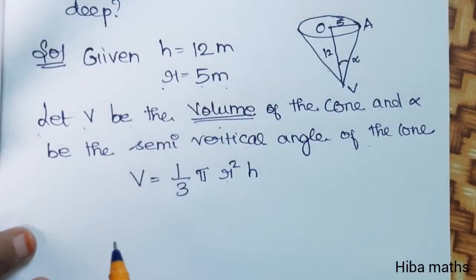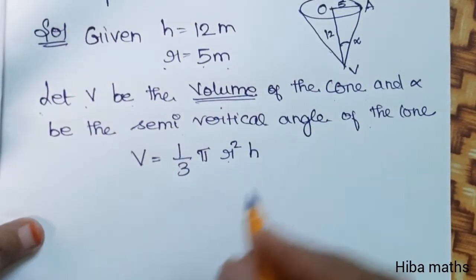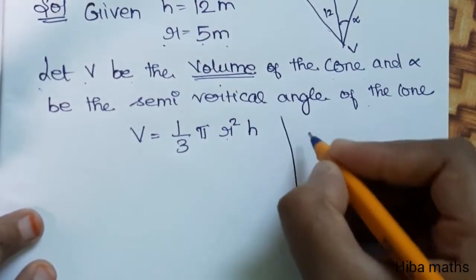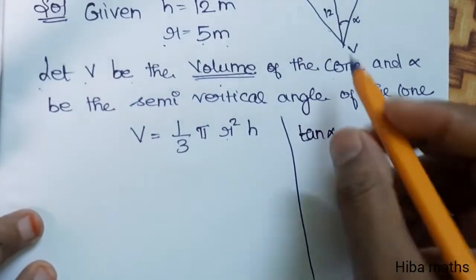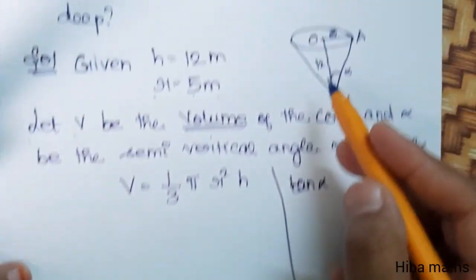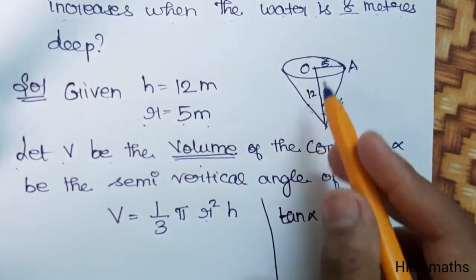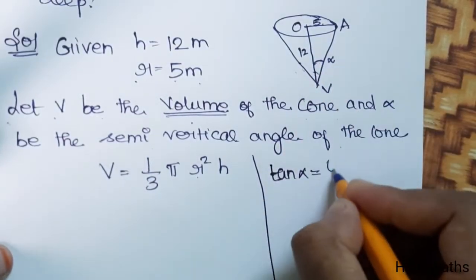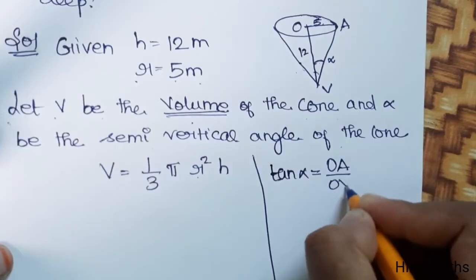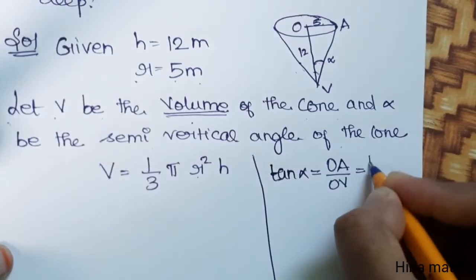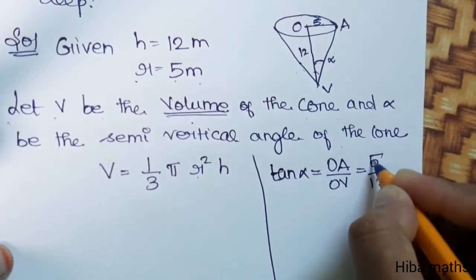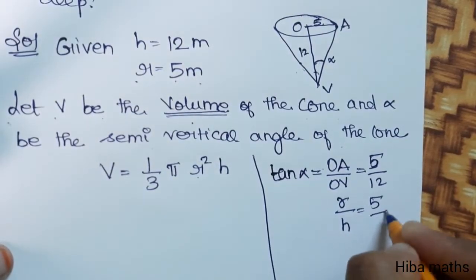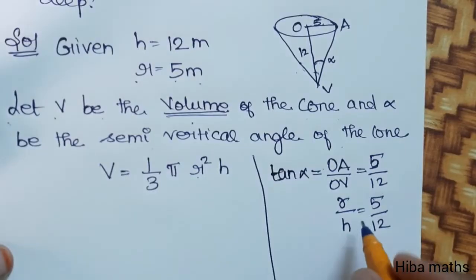We express H in terms of R using the diagram. Tan alpha equals opposite over adjacent. Tan alpha equals OA over OV, which is R over H, and that equals 5 over 12.